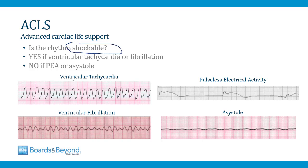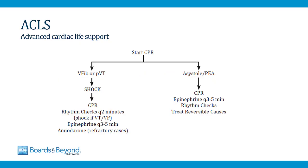Ventricular tachycardia and ventricular fibrillation are shockable rhythms, meaning you can deliver an electric shock to the chest and potentially restore normal sinus rhythm and normal cardiac output. That's why one of the first things you want to do is apply a monitor and check for these two rhythms. If the patient has PEA or asystole instead, these rhythms are not shockable and you don't want to administer a shock.